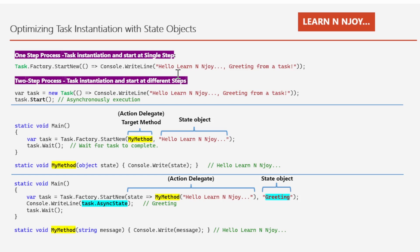In the one-step process, I passed an action delegate written as a lambda expression — an anonymous function that takes no argument and simply writes 'Hello Learn Enjoy, greetings from a task' to the console using console.writeLine. In the two-step process, I instantiated the task with the task constructor, passed the action delegate as an argument, and then started the task with the start method, which executes asynchronously.